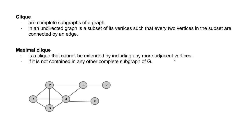For example, in this graph below, {1,2,3,4} is a maximal clique. {2,4,5} is a maximal clique. {5,7} is a maximal clique of two vertices. If you add 4 to the subset {5,7}, it is no longer a clique, so {5,7} is a maximal clique. Similarly, {4,6} is a maximal clique.